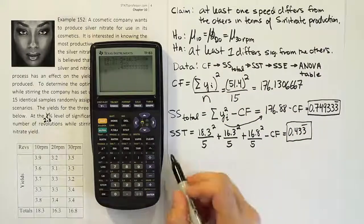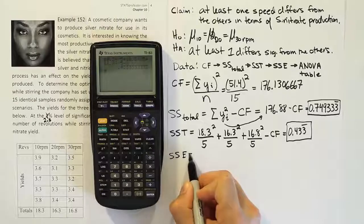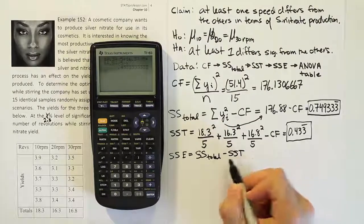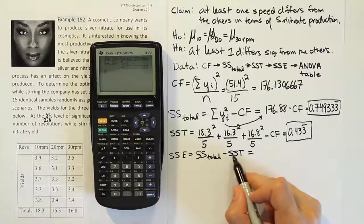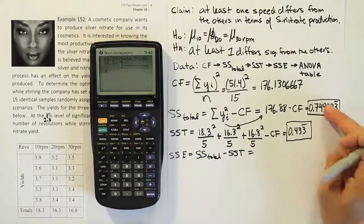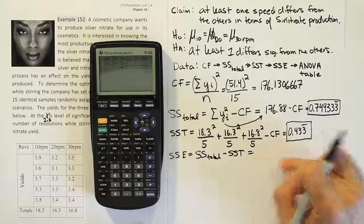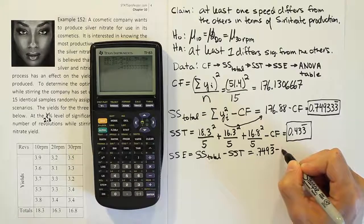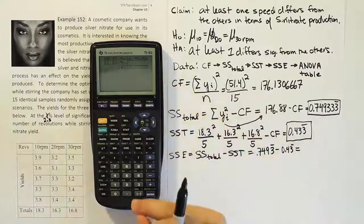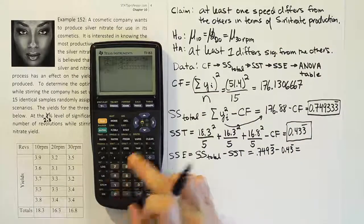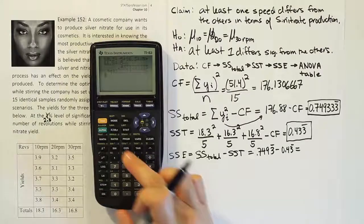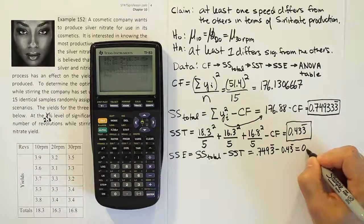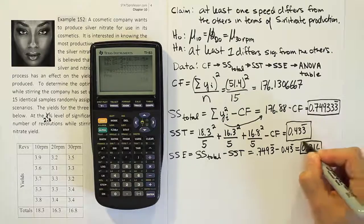What we have to do next is the sum of squares for error, SSE. That's very easy — we just take SS Total and subtract off the amount attributable to the treatment. So, SS Total minus SS Treatment: 0.7493 repeating minus 0.43 repeating. Working that out in the calculator gives us 0.316. So 0.316 is our sum of squares for error.